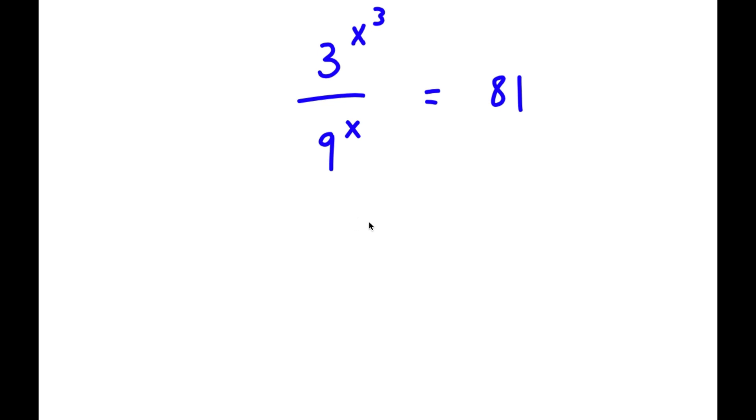In this problem, I have 3 to the power of x to the power of 3 over 9 to the power of x, which is equal to 81.